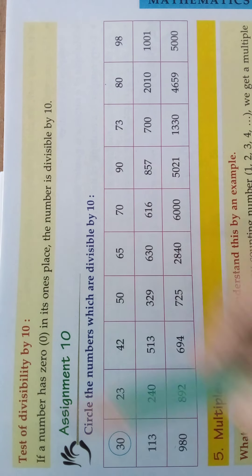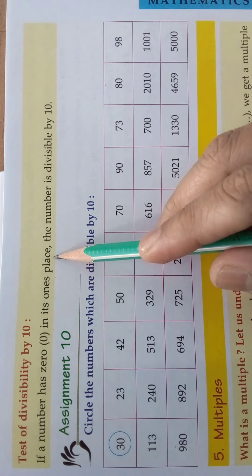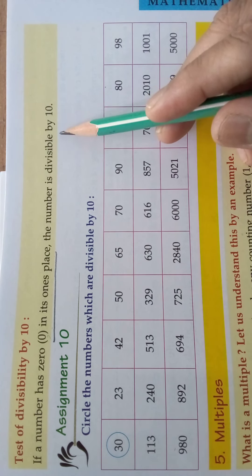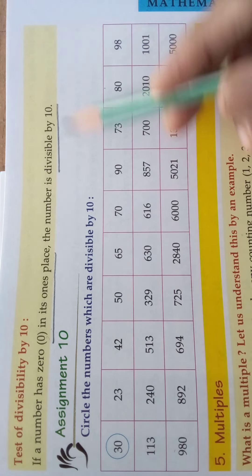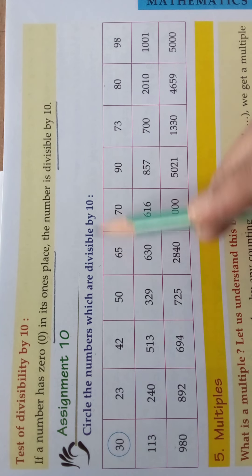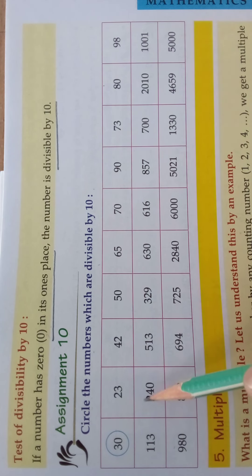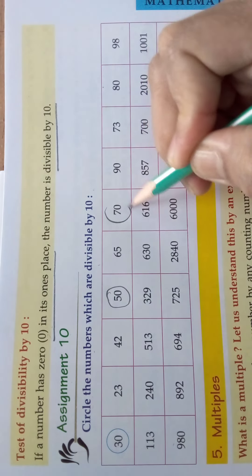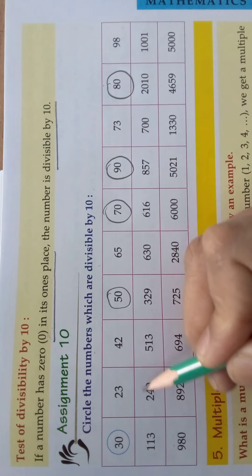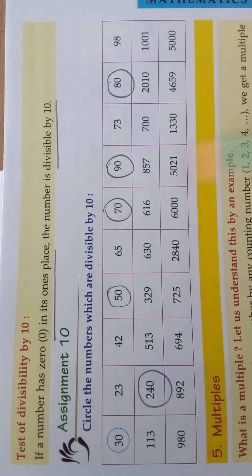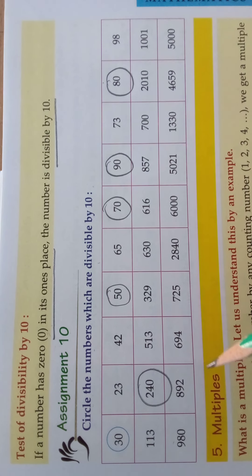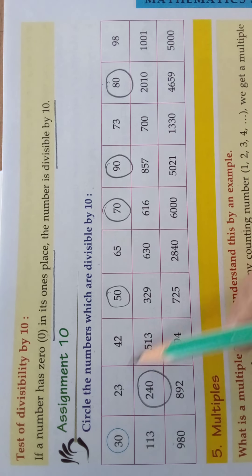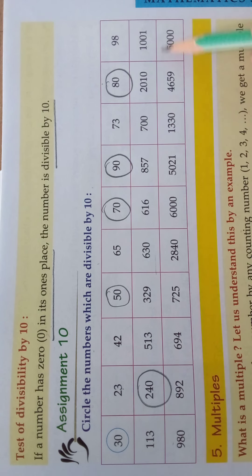Test of divisibility by 10. The condition: if a number has 0 in its ones place, the number is divisible by 10. The assignment: circle the numbers which are divisible by 10. So we should check which numbers have 0 in their ones place and circle them. It is very easy. In this way you should do the remaining sums — check whether the last digit is 0, then circle those numbers.